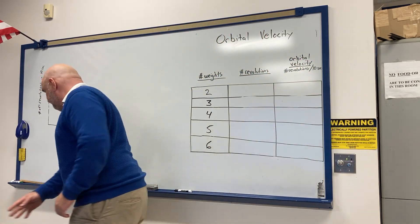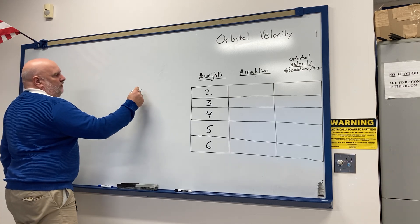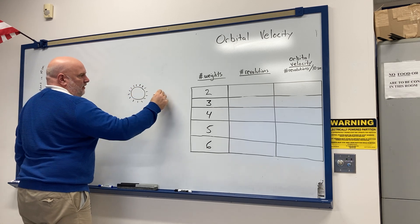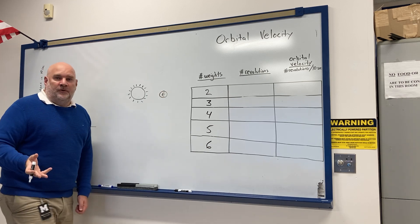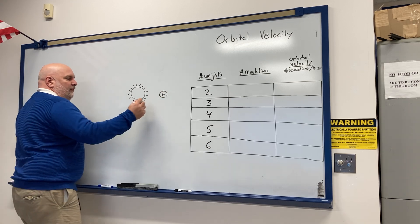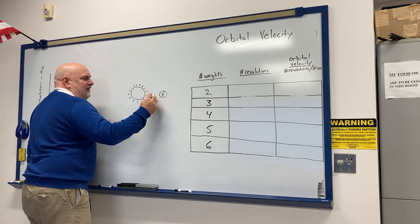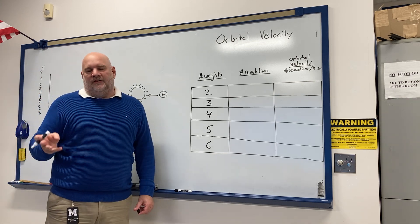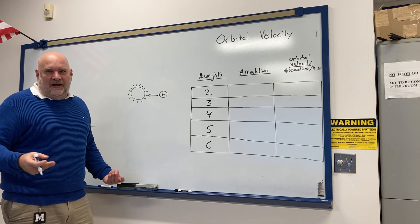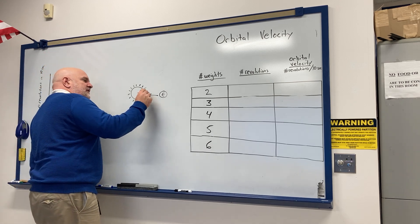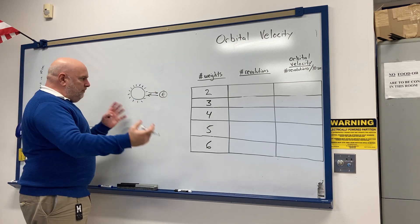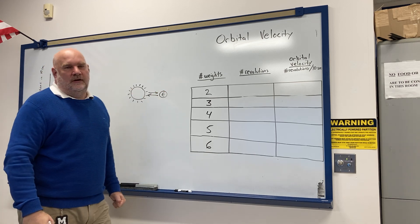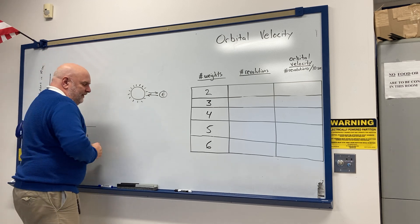Let's say here's the Sun and here's the Earth. The Sun is pretty big and has lots of mass, so it has lots of gravity pulling the Earth towards it. Now the Earth, although not nearly as massive as the Sun, still has a fair amount of gravity, so the Earth is pulling the Sun towards it. If they're both pulling towards each other, you would think they would crash into each other — but they don't.